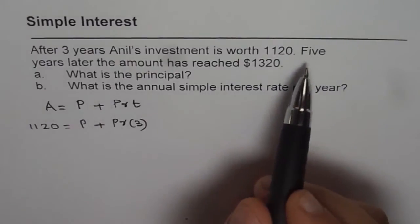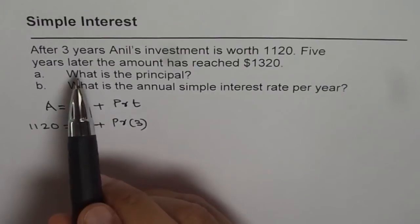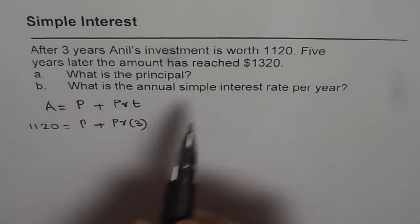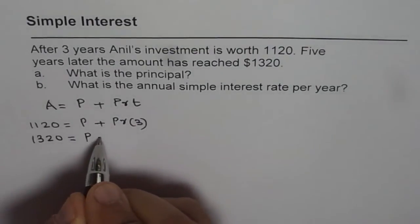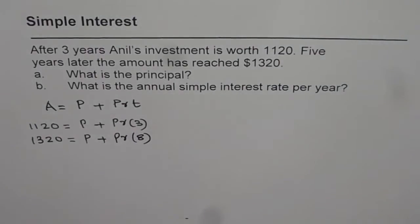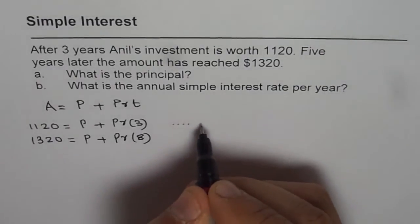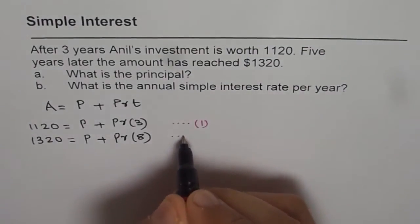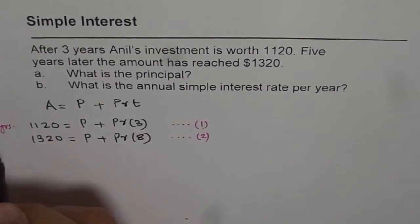Now how about five years later? When we say five years later, it really means three plus five, eight years. So after eight years the amount will become $1320. We get 1320 = P + PR(8). I hope this point is clear to you. Why it is eight? This equation number one is after three years, and this equation number two is after three plus five years. So this is after three years and this is three plus five years. That's how you get eight.